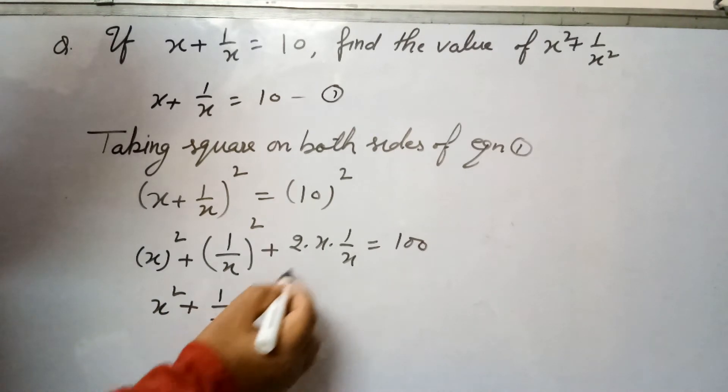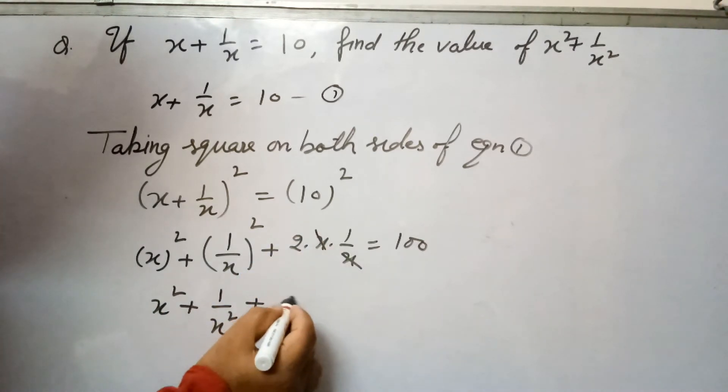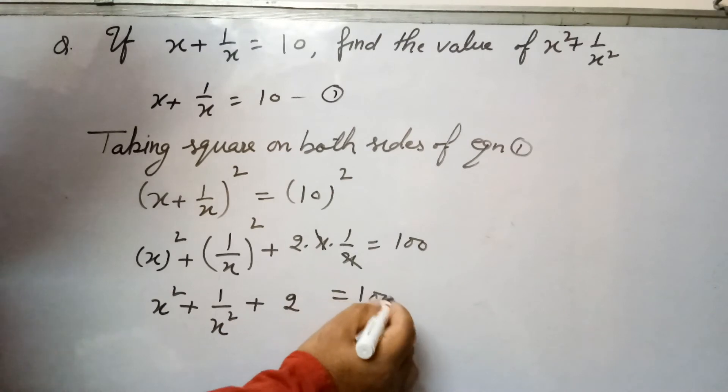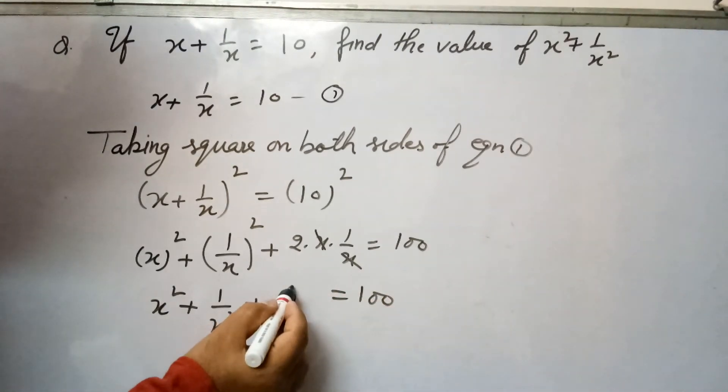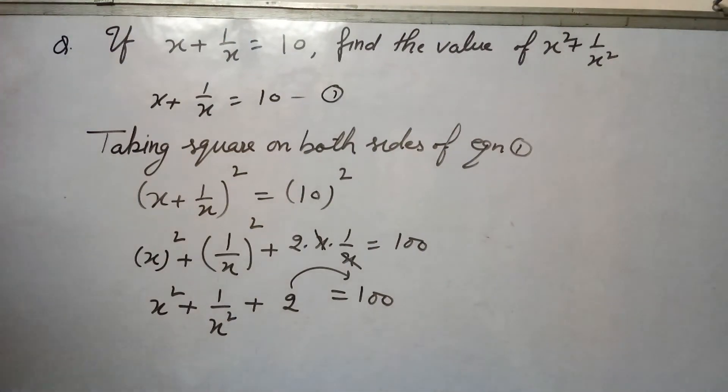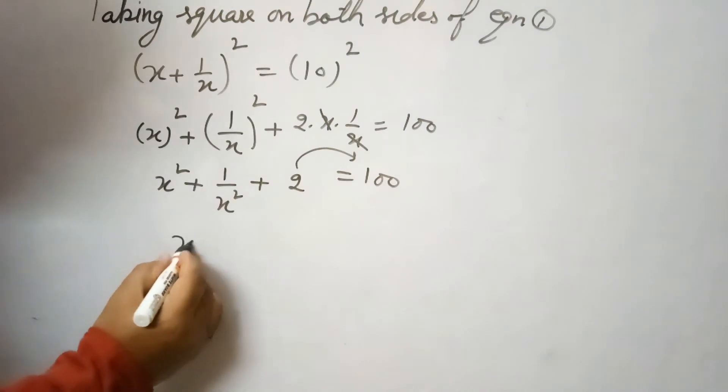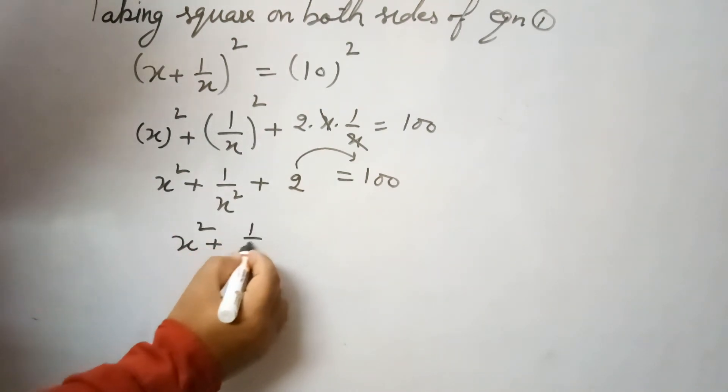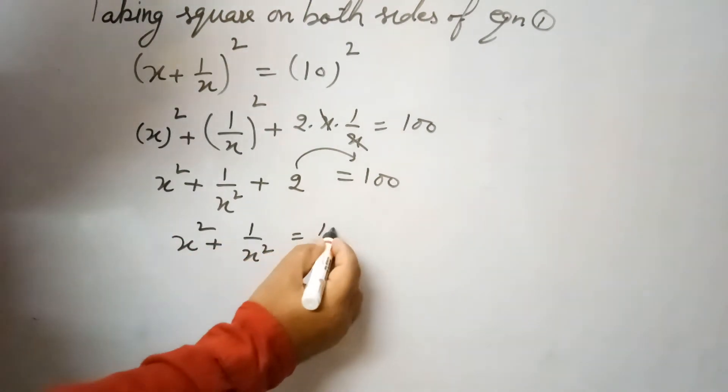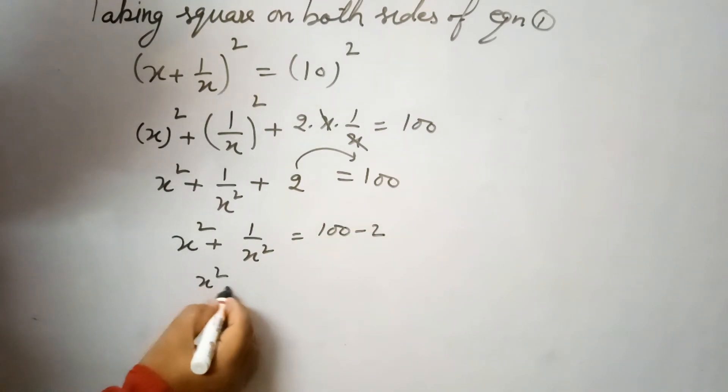Now we have to shift this 2 to the right-hand side, so this equals x square plus 1 over x square equals 100 minus 2.